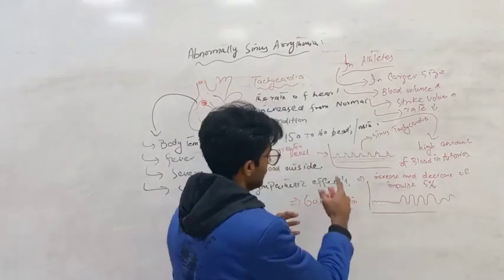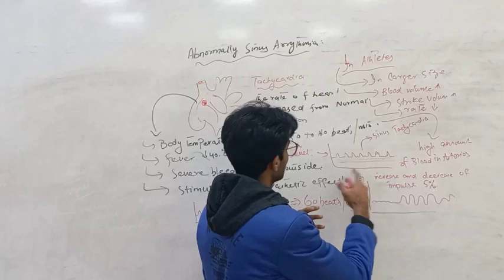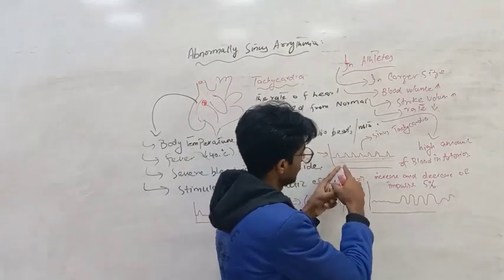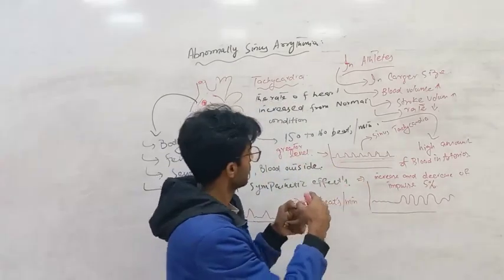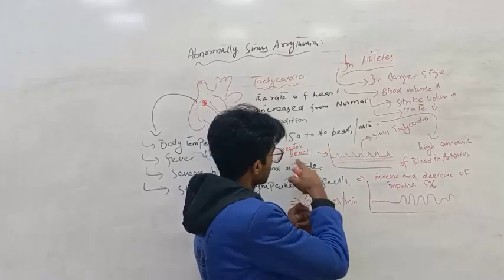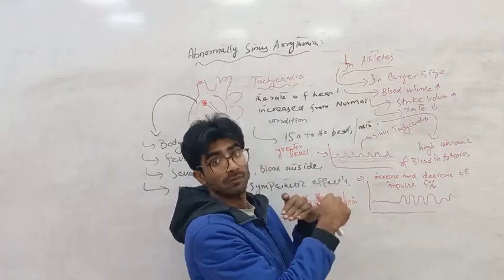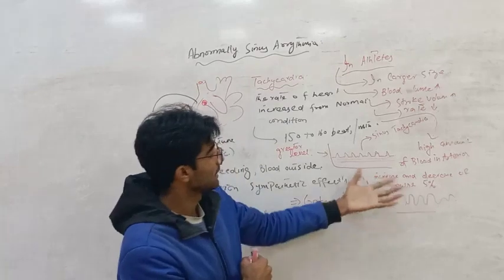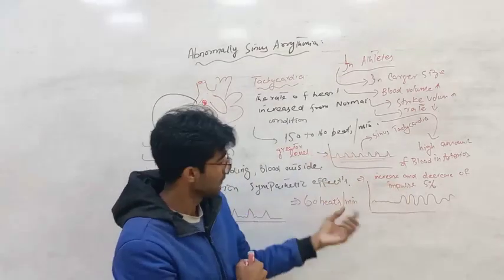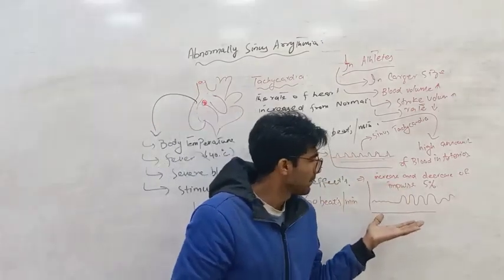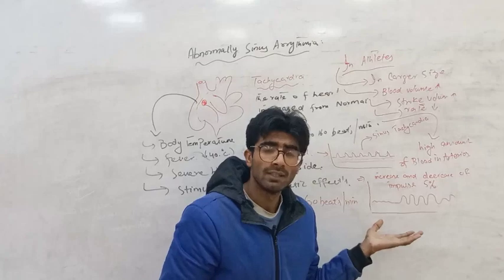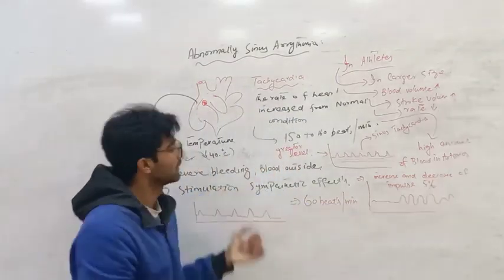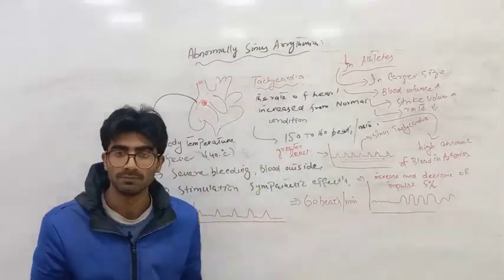In sinus tachycardia, the production of impulse is in a slower amount — and that concept is here in front of you. Mostly, there is a 5% increase and decrease of impulse in sinus arrhythmia. Thank you so much for this information.